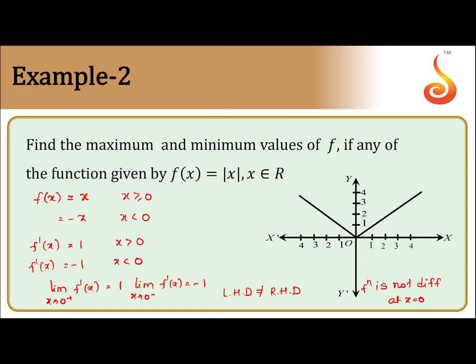But what we see is the function is decreasing here and increasing here, so x equal to 0 is the point of minima. Because when traveling from minus infinity to plus infinity, the function is decreasing then increasing. This is the point where f'(x) does not exist at x equal to 0, but even then we say it is the point of minima. The key definition is: it is decreasing then it is increasing, and this is the point of minima.